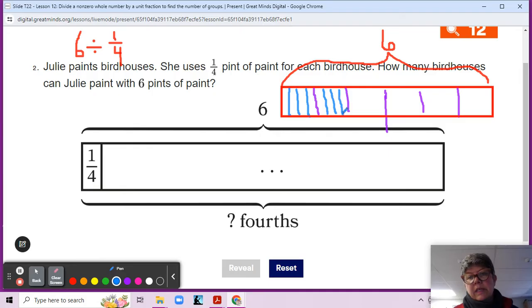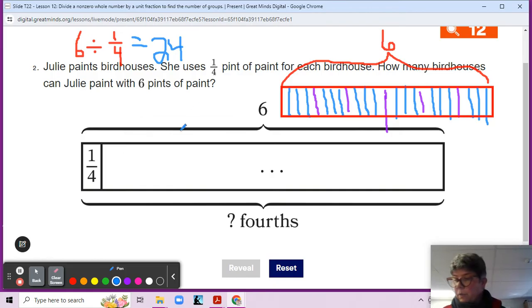We could almost count as we go, huh? Eight fourths makes two holes. Twelve fourths makes three. Three times four is 12. Four is 16. Four times four is 16. Five times four is 20. Five fourths, I mean four fourths, that makes five. And then six, six times four is 24. So if each of these is enough paint for one birdhouse, then we can see that six divided by one fourth is 24. And she can paint 24 birdhouses.